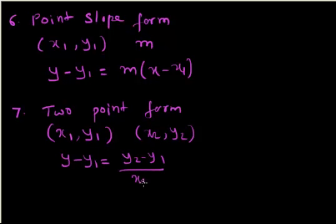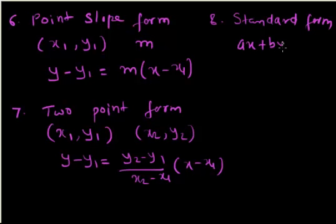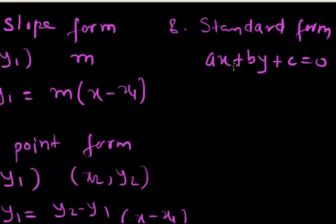The point-slope equation is given by y minus y1 equals y2 minus y1 over x2 minus x1, times x minus x1. The last form of the line is the standard form. The standard form of the line is the equation written as Ax plus By plus C equals 0, with all the values on the same side of the equals sign and 0 on the other side.